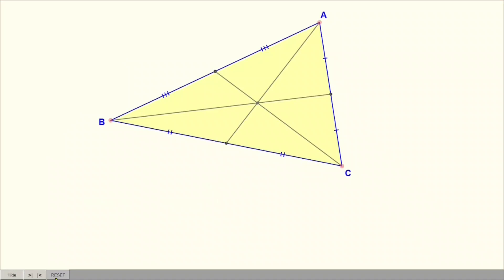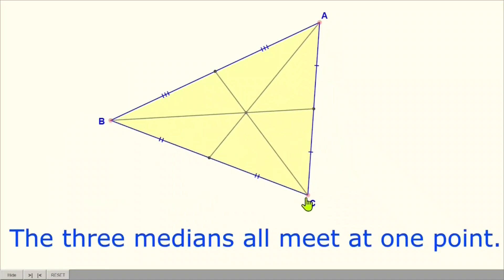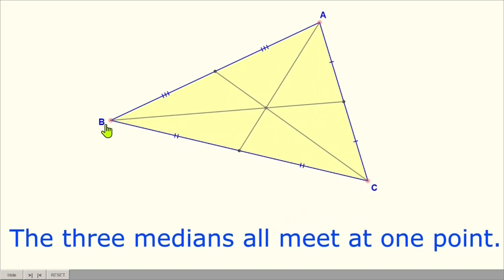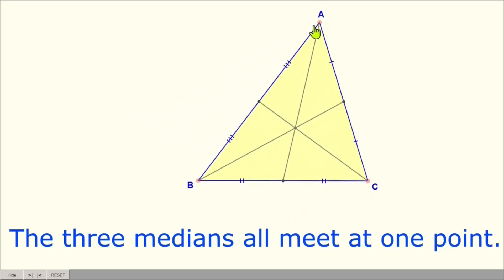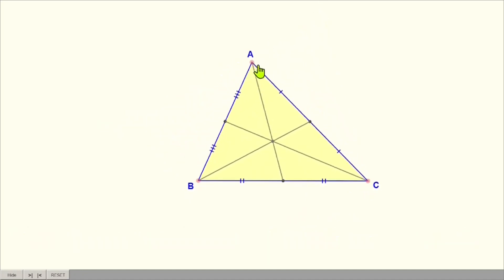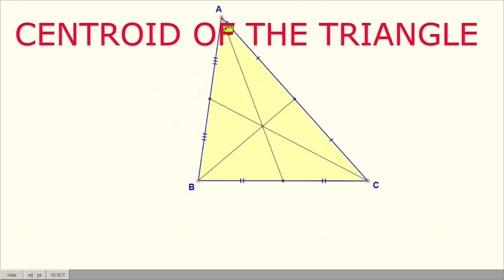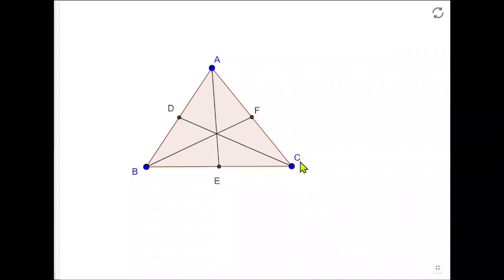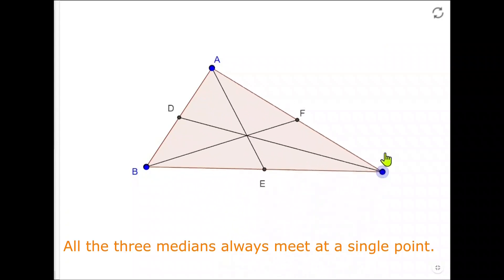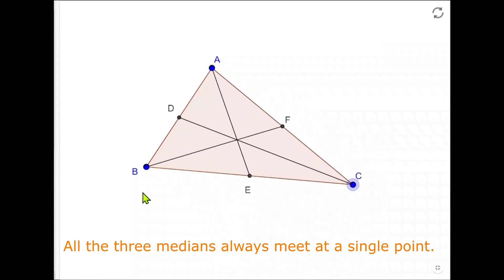Now it's time to reveal the fascinating fact. No matter what shape the triangle, all three medians will always intersect at a single point, and this point is called the centroid of the triangle, which is also known as the center of gravity. As we have seen that all three medians always intersect inside the triangle, we can conclude that the centroid of a triangle always lies inside the triangle.